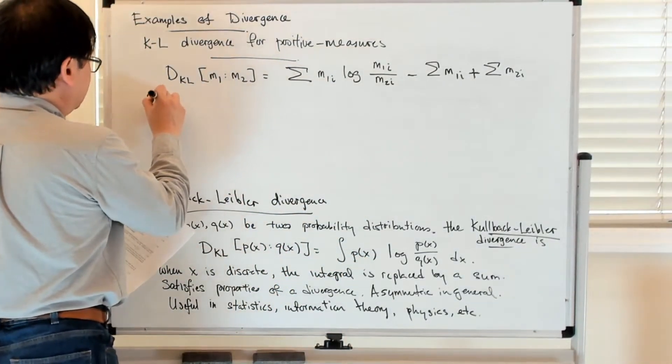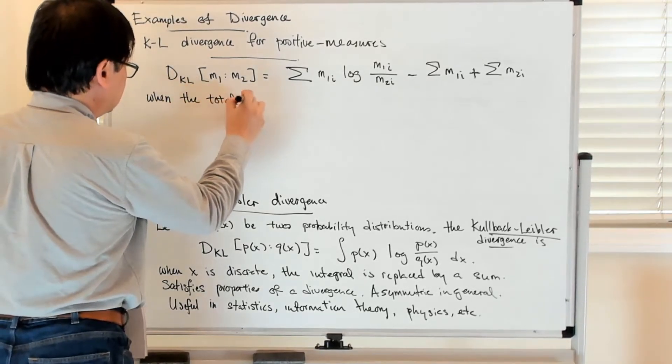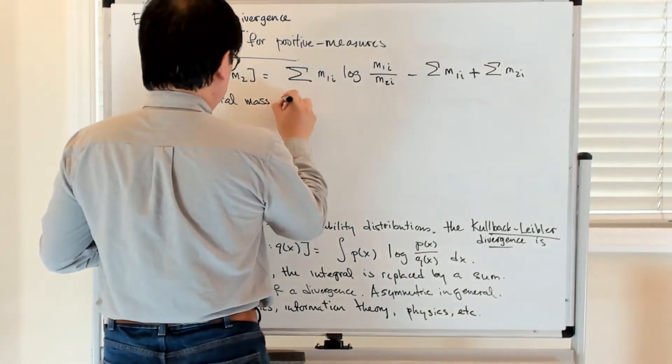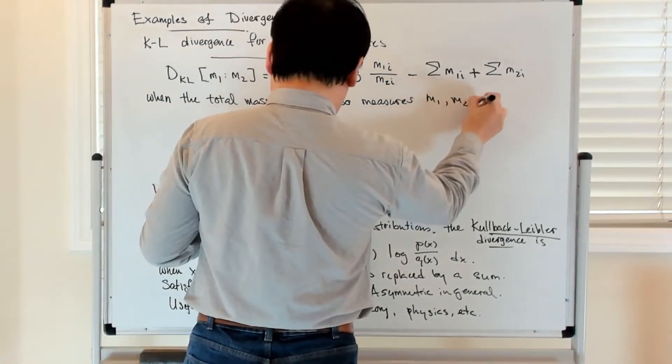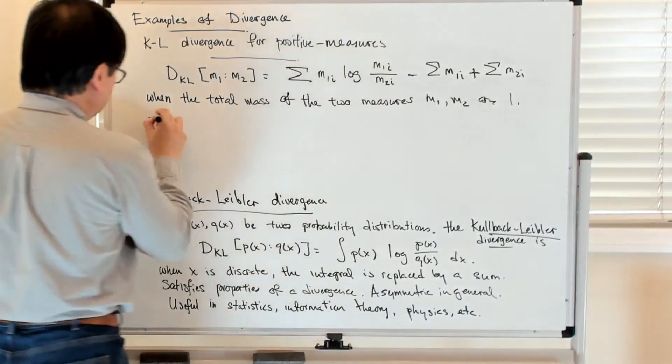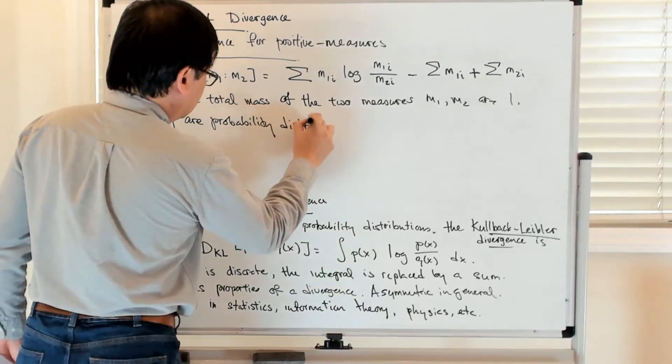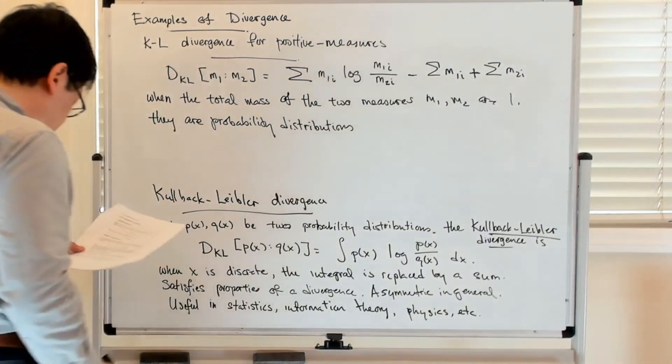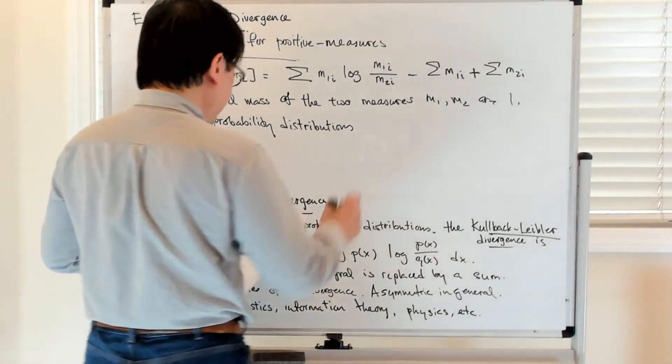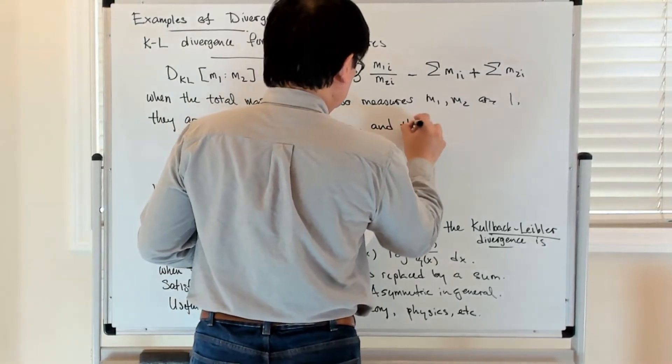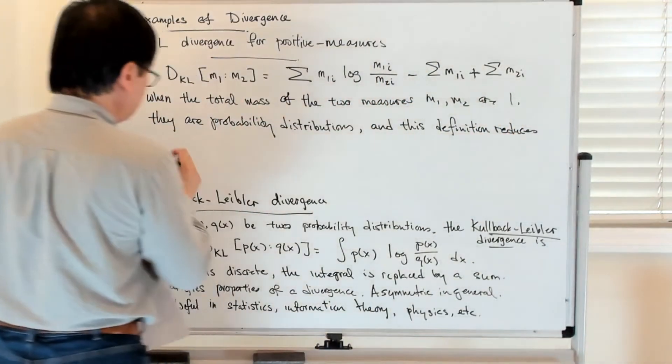So when the total mass of the two measures m1 and m2 are one, they are probability distributions, and this definition reduces to the definition of KL for probability distributions.